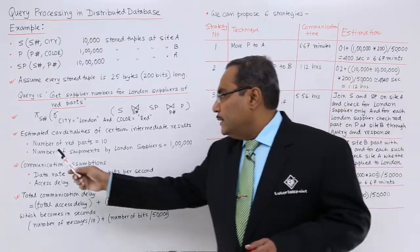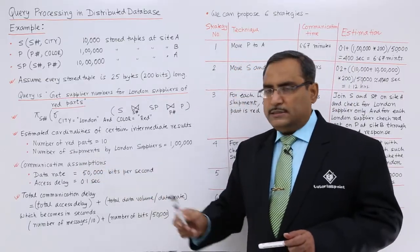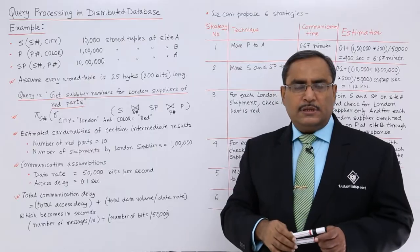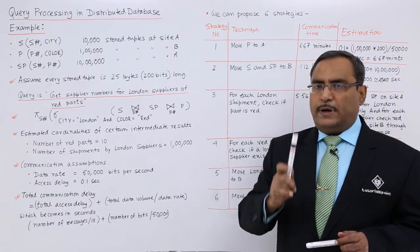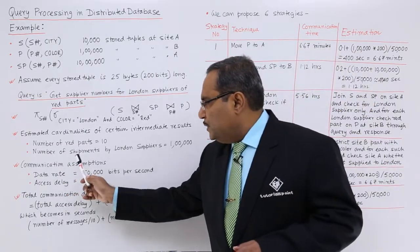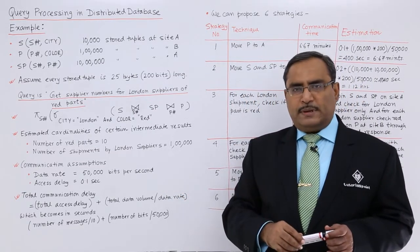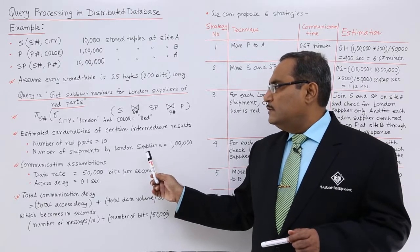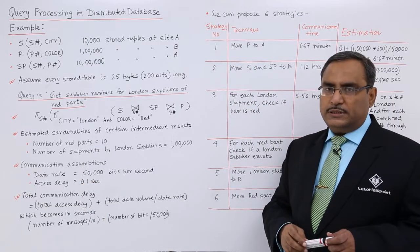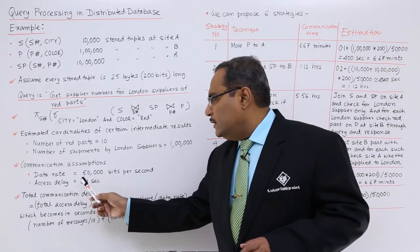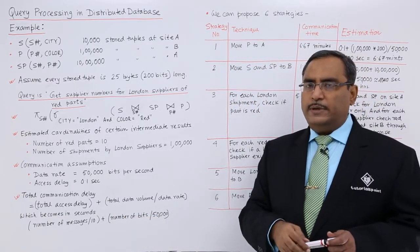Let us get some more information. Estimated cardinalities of certain intermediate results: the number of red parts is equal to 10, meaning out of one lakh tuples in P, only 10 tuples have part color equal to red. The number of shipments by London suppliers is equal to one lakh. The communication assumptions are: data rate = 50,000 bits per second, and access delay = 0.1 second per message.